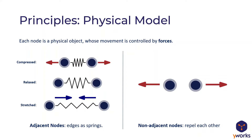The principle is that we assume a physical model in which each node is represented by a physical object in the plane that can be moved by forces. For example, a force can pull a node to the left — that's how we move nodes in the plane. We define the forces and the algorithm applies them. For non-adjacent nodes (nodes sharing no edge), we introduce repelling forces: if two nodes come close together with no edge in common, they are pushed apart, and the force decreases with increasing distance.